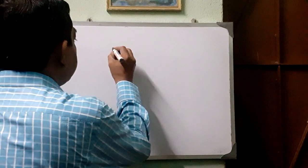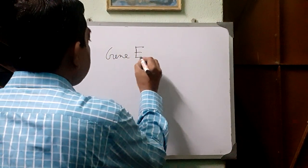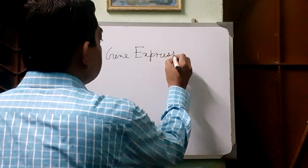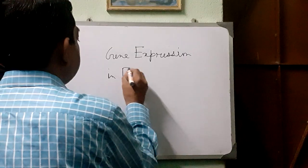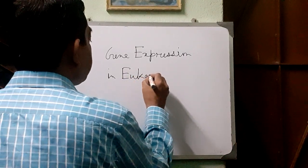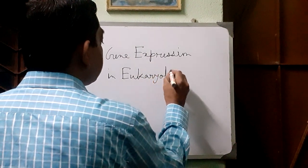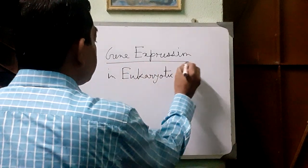But in the case of eukaryotic cells, gene expression is a little bit complex. In the case of eukaryotic gene expression, the regulation of gene expression happens mainly at five levels. There are five levels.